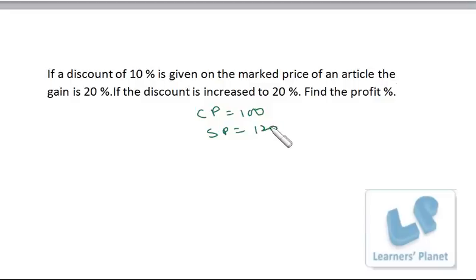So if the profit is 20%, that means selling price in the first case is 120 rupees. Now selling price is 120 rupees, and that selling price is achieved when 10% discount on marked price is given. That means 90% of the marked price is this selling price, so marked price will be 120 by 0.9.